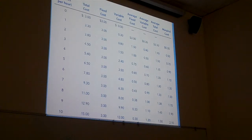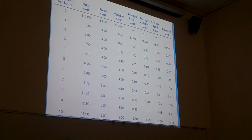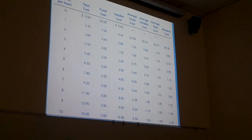The average fixed cost curve falls very fast at first and continues to fall forever, but at a decreasing rate. When you're making a hundred units and the fixed cost is $3, three divided by a hundred is a very small number. If you make a hundred and one units, the cost is falling but by a really small amount. It continues to fall, but by smaller and smaller amounts as you increase your productivity.